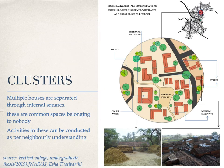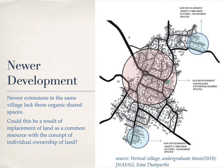Interestingly, she observes that apart from the motorable pakka roads, there are small pedestrian paths which cut through the clusters. These paths open to common courtyards which are shared among the houses in the cluster. Activities in these can be conducted as per neighbourly understanding. However, newer developments in the same village lack these organic shared spaces. Could this be the result of the more modern concept of individual ownership of land?